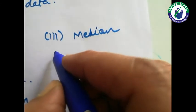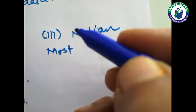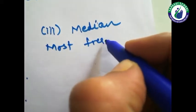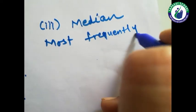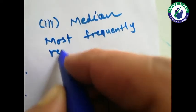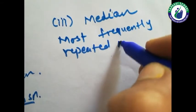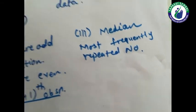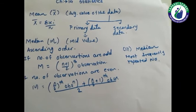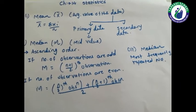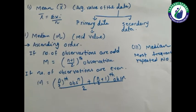The last concept is mode. Mode is nothing but the most frequently repeated number in the data. So here, students, we have learned the concept of three measures of central tendency: mean, median, and mode.